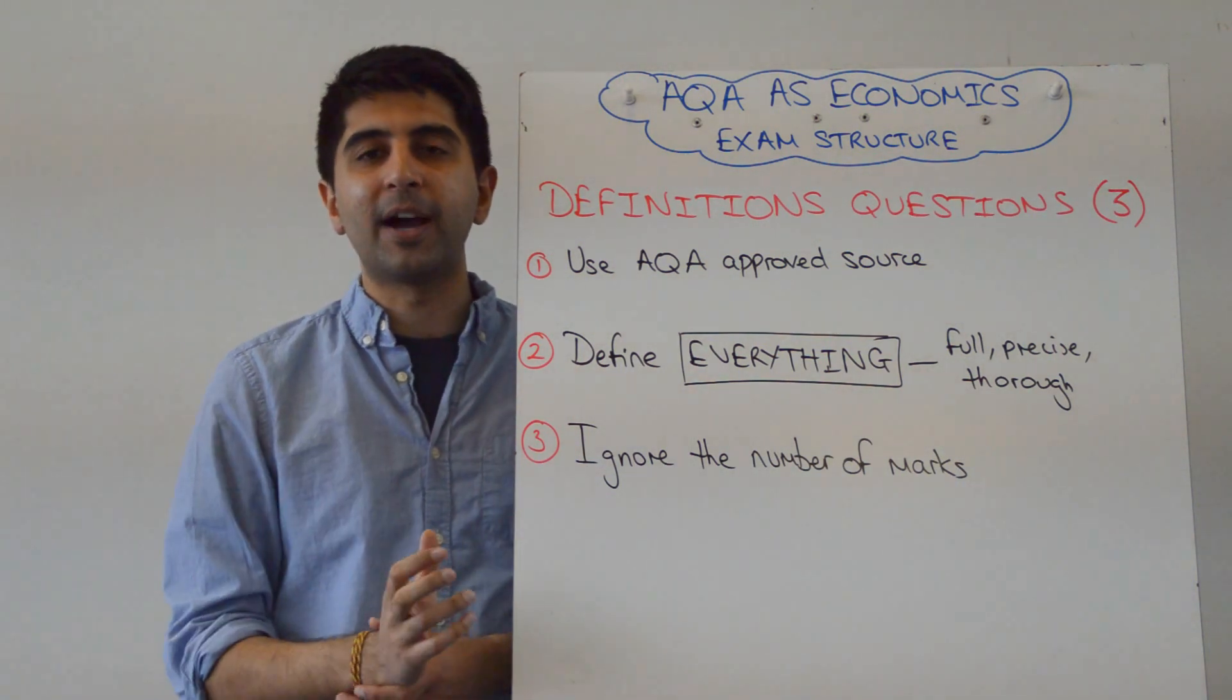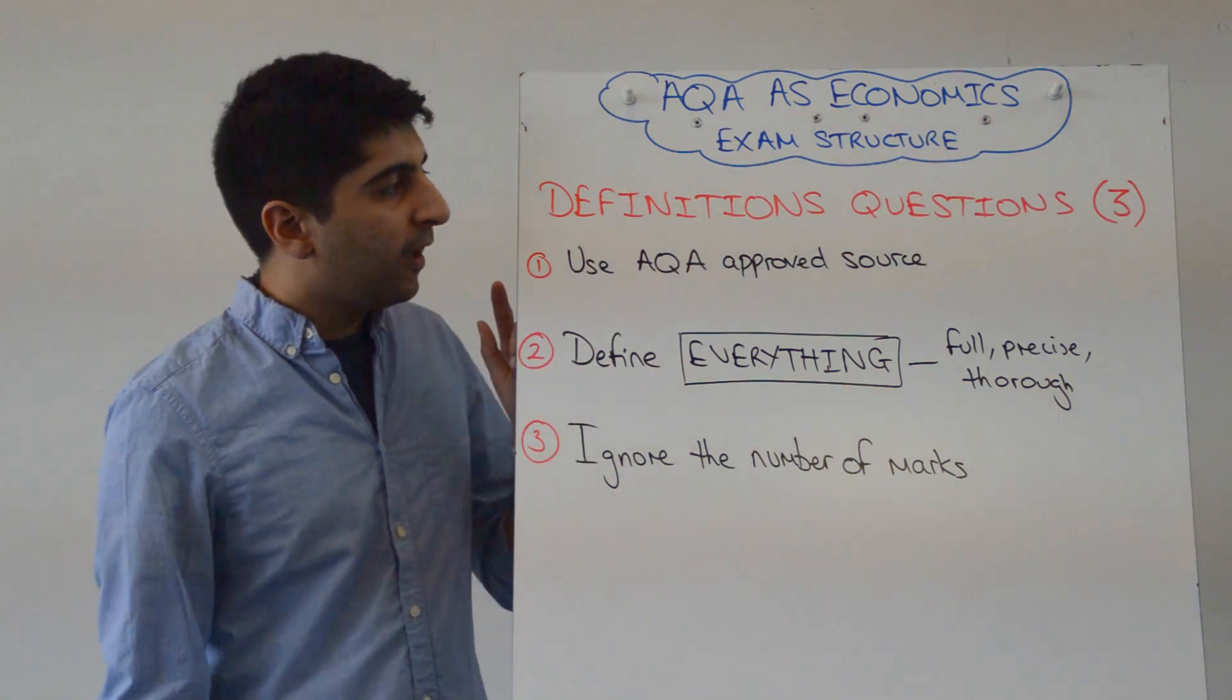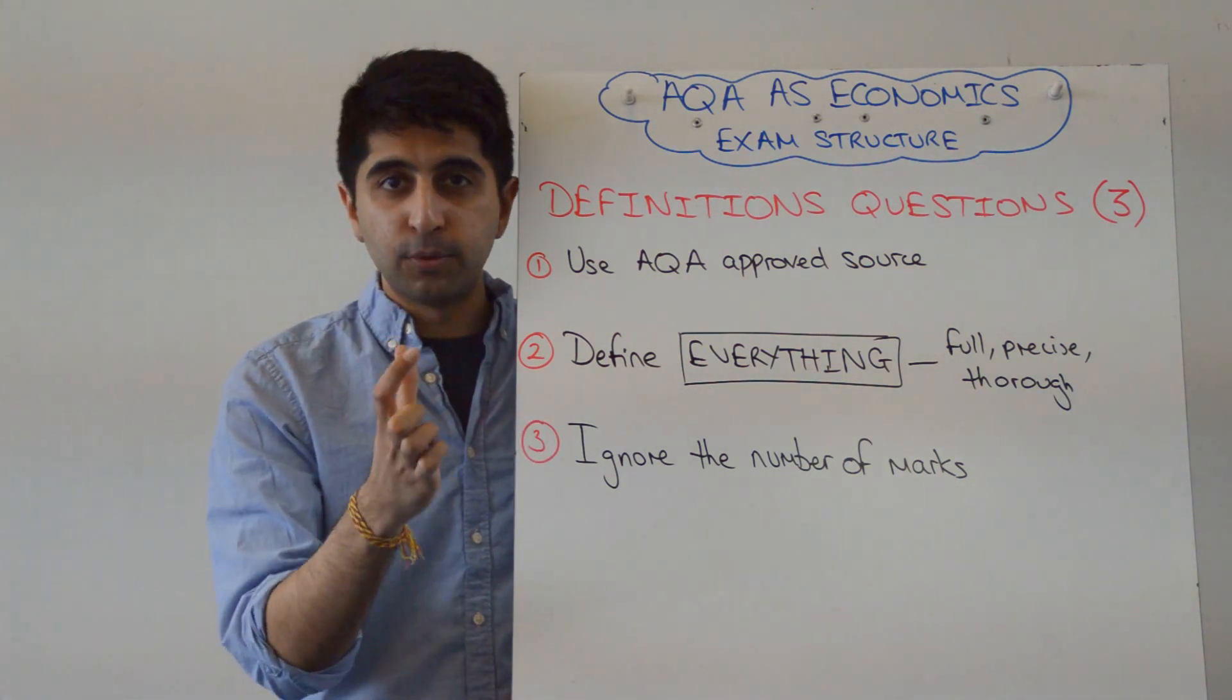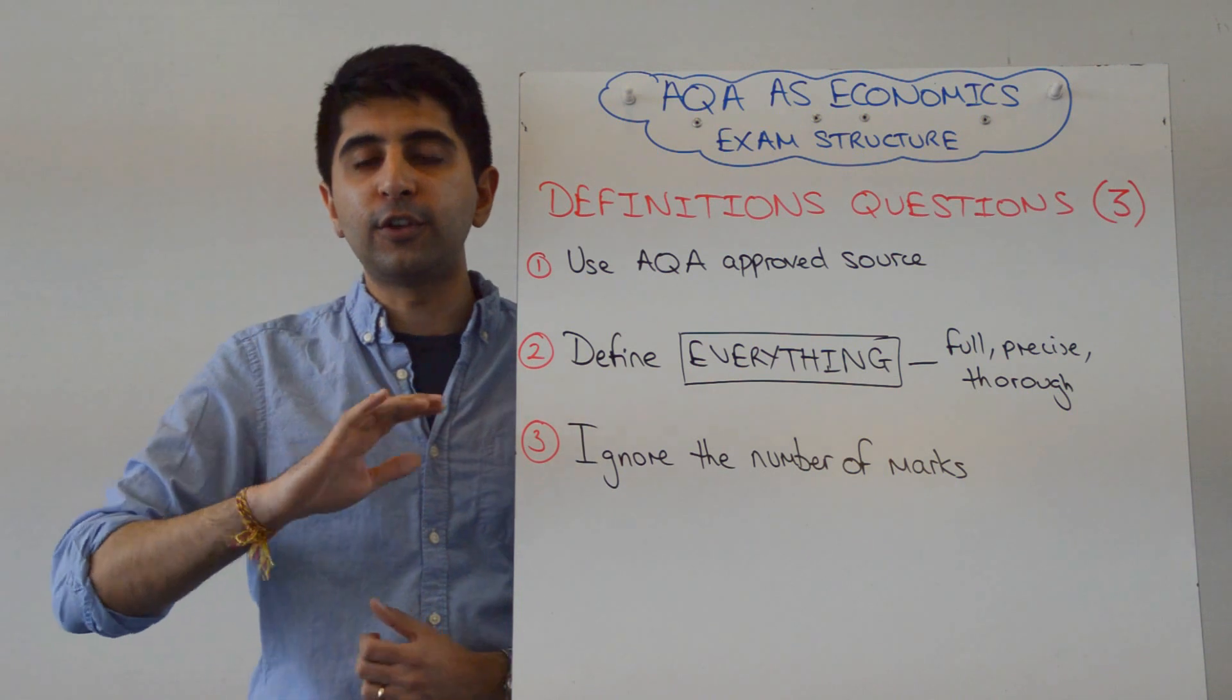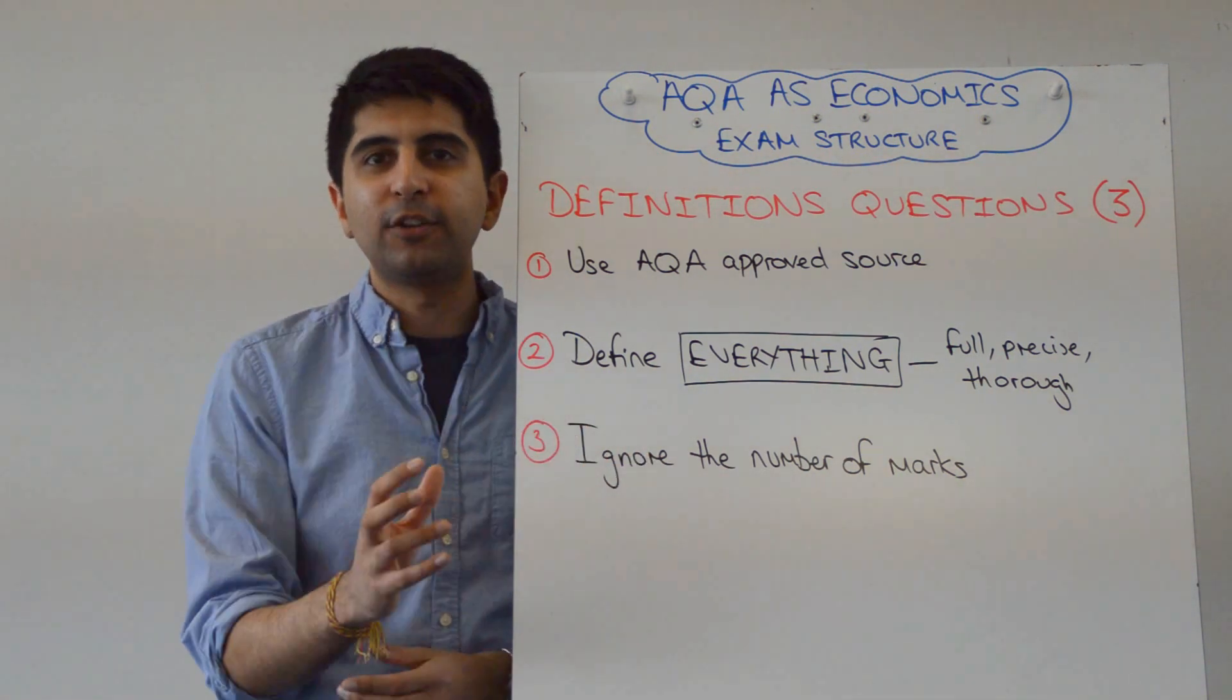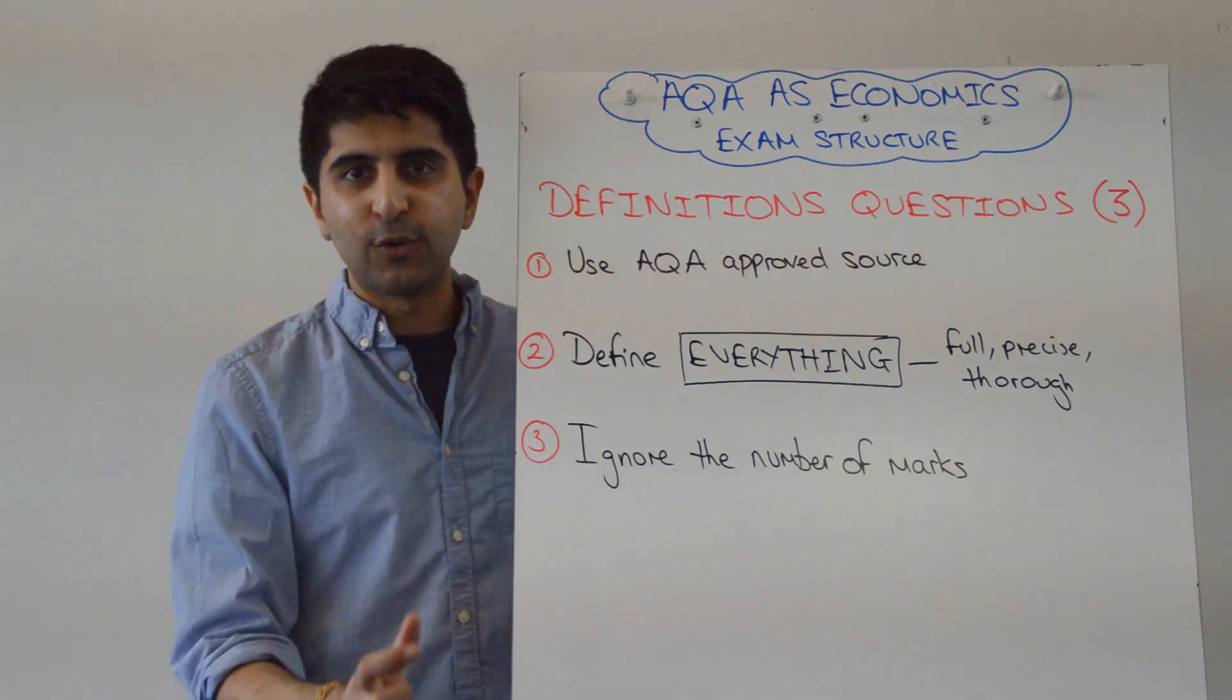But for you to get those three marks, you've got to make sure you follow these three different criteria. First, the definitions you learn and write must be from an AQA-approved source. That's important, otherwise you don't know that what you have learned is going to be what's in the mark scheme. So make sure it's AQA-approved what you're learning, so you know what you write down is going to score you full marks.